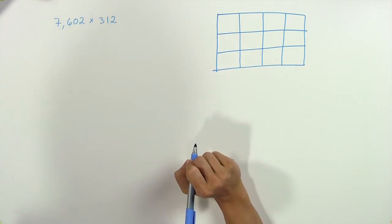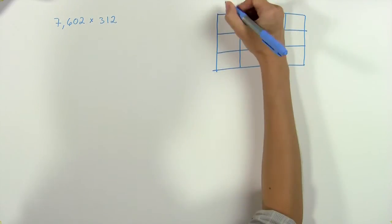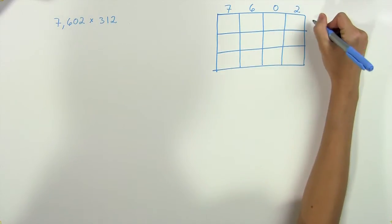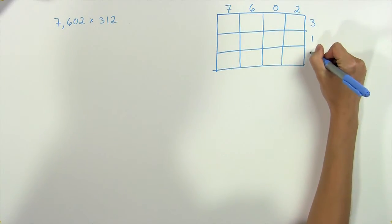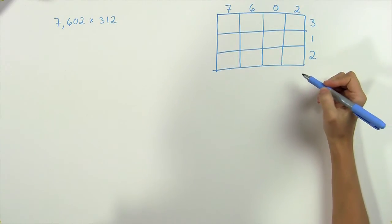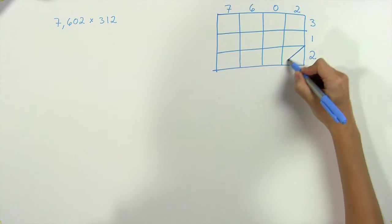Our last step to set this up is to go ahead and put these two numbers along the top and the side, like this. Seven, six, zero, two, and then three, one, two down the side. And then also we draw diagonal lines from corner to corner and extending past the bottom of the grid, like this.